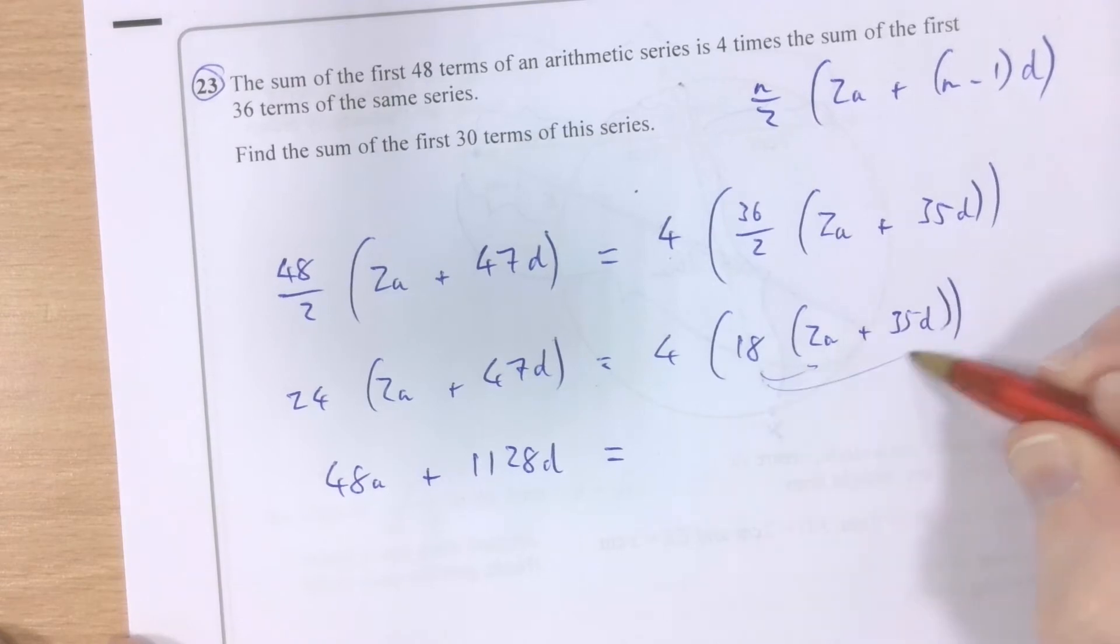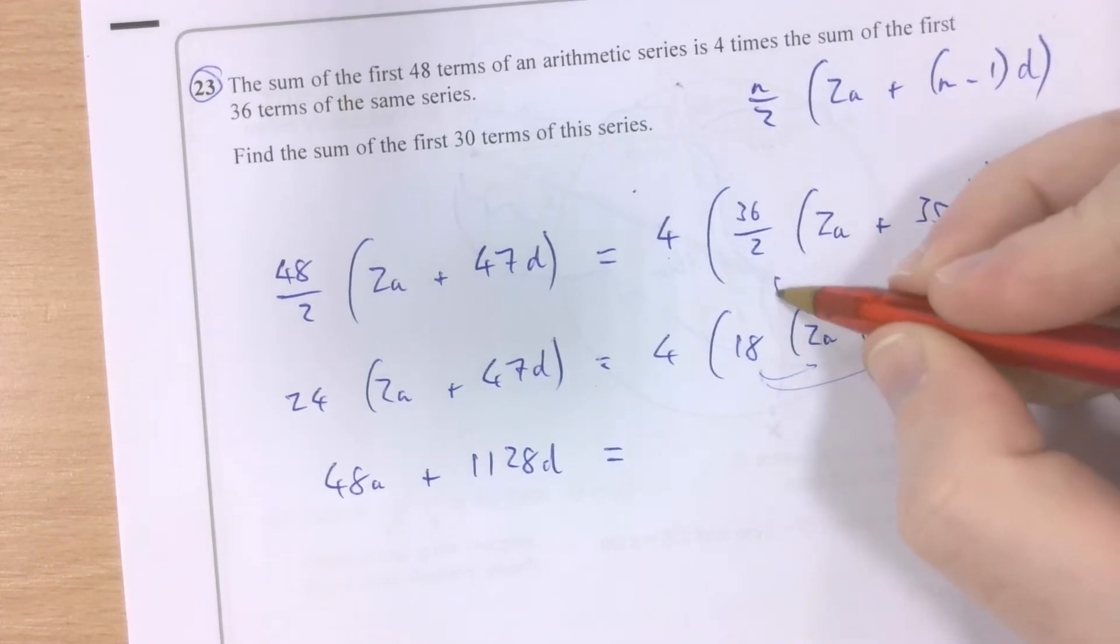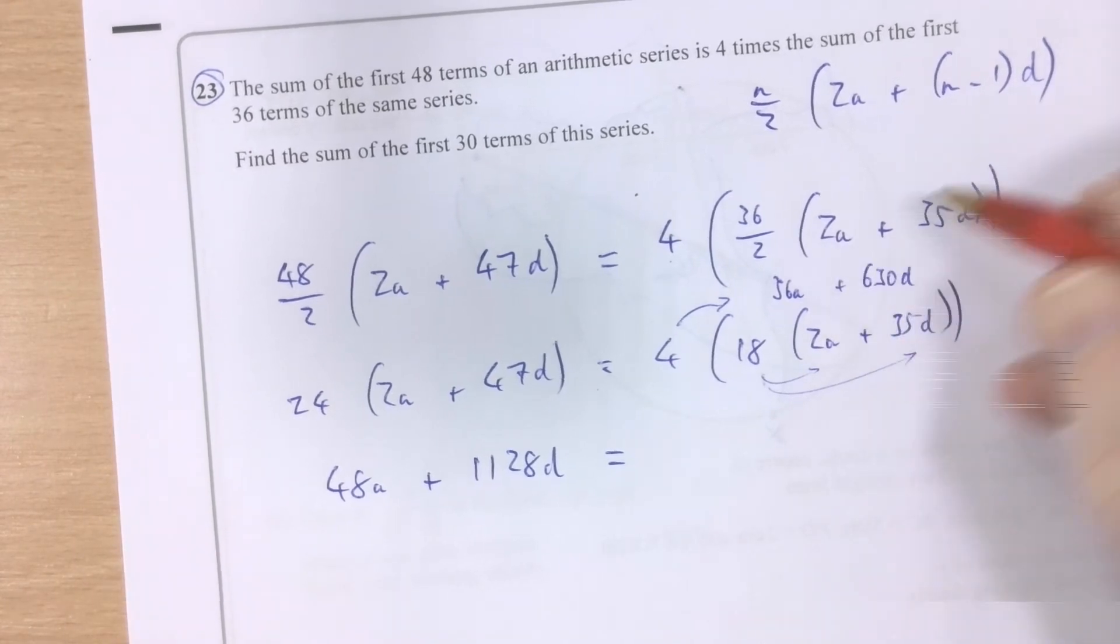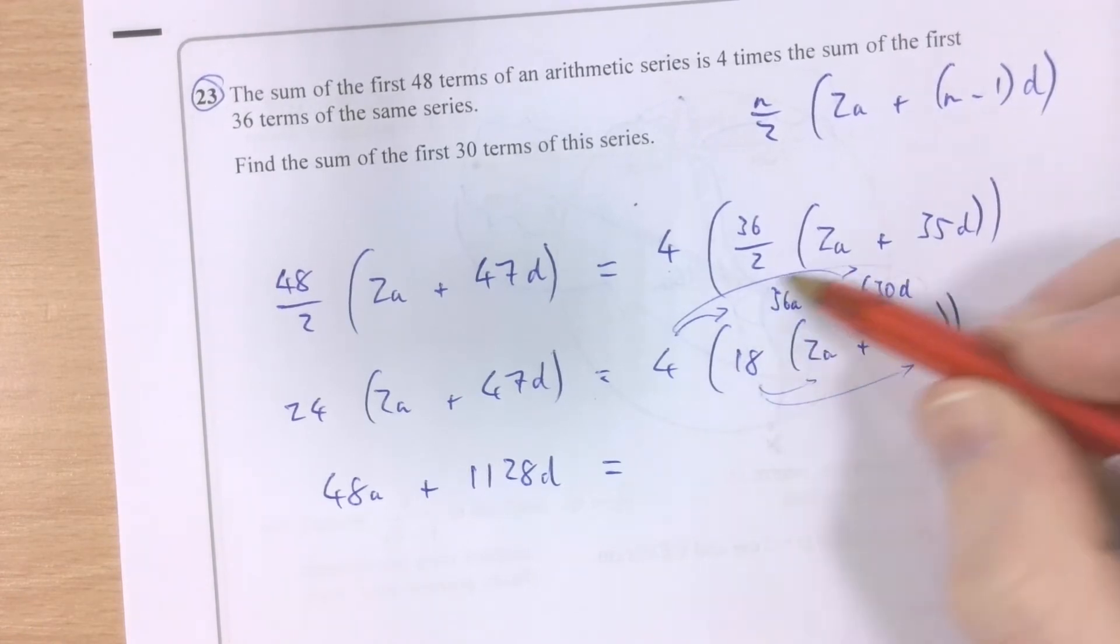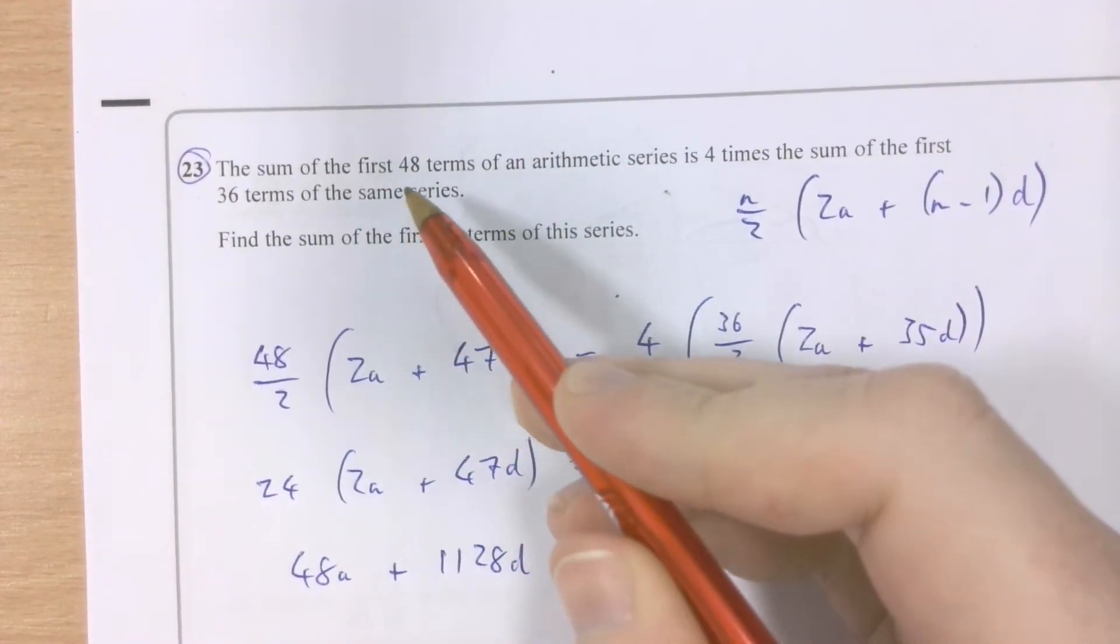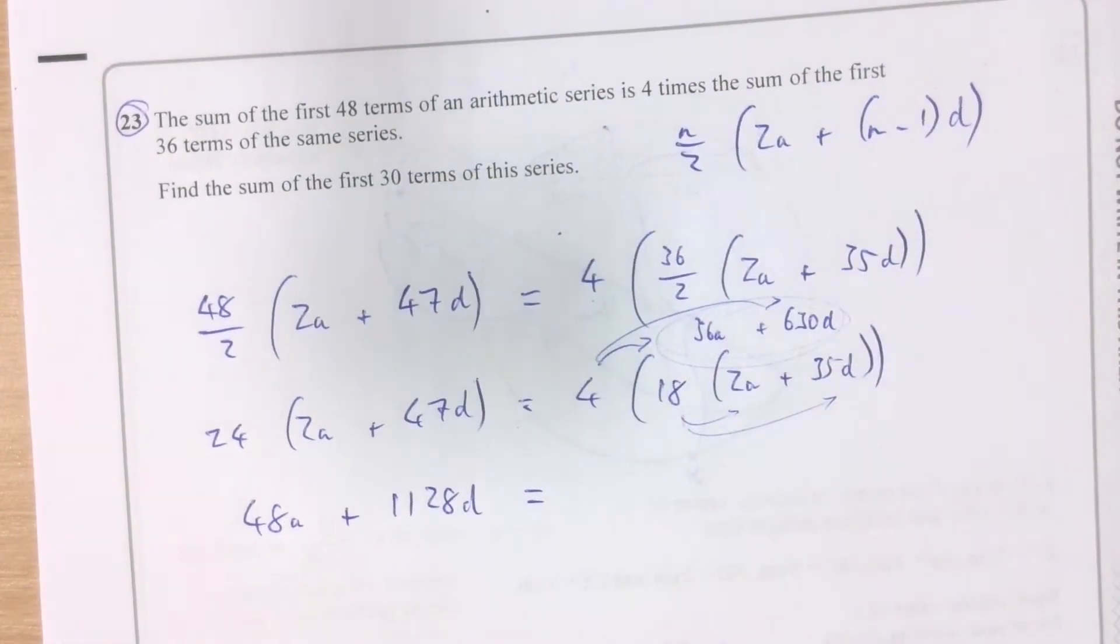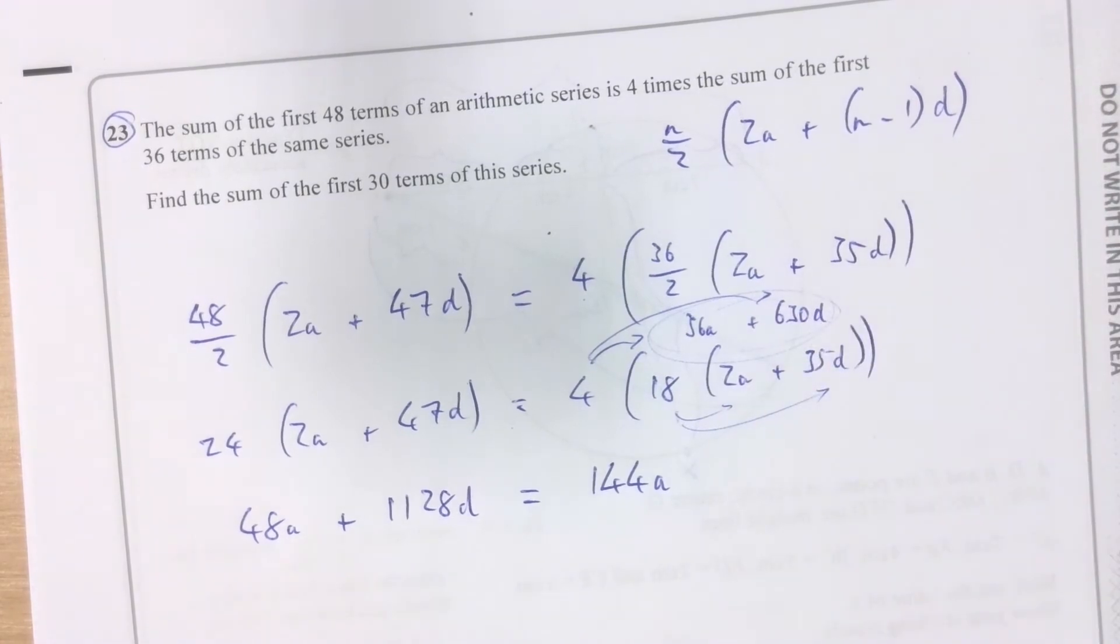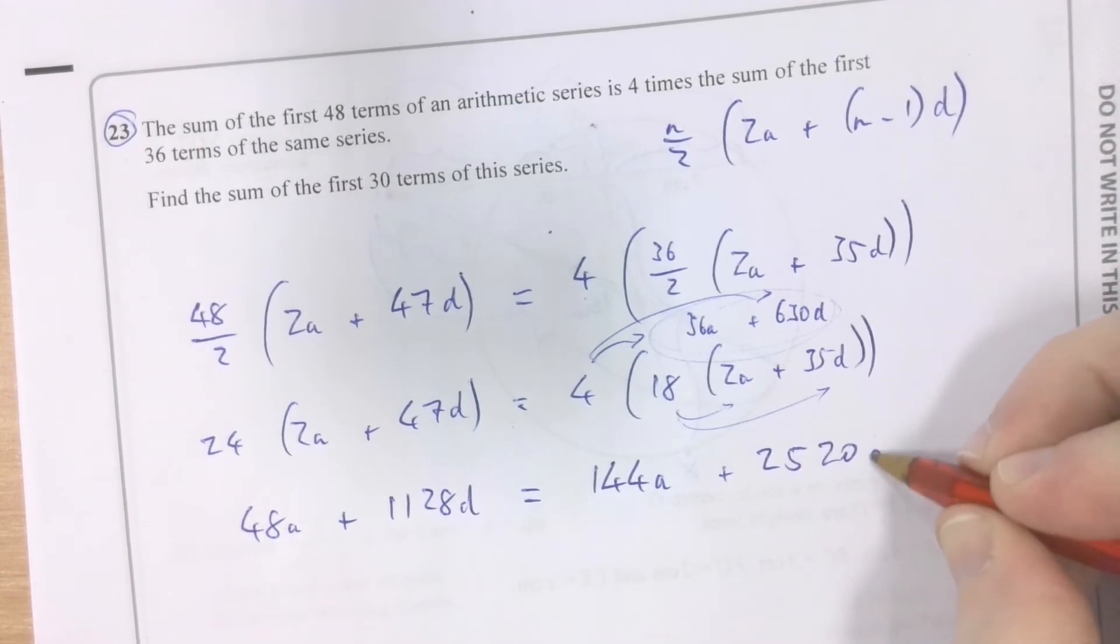And then expanding out this inside here. 18 times 2 makes 36a, but then that is in itself being multiplied by 4. 18 times 35 is 630d, but that is in and of itself being multiplied by 4. Effectively, this is the sum of the first 36 terms of the series, but we've said the sum of the first 48, i.e. this algebra, is equal to 4 times the sum of the first 36. So let's work that out. 36 times 4, 144a, and then 630 times 4 is 2,520d.